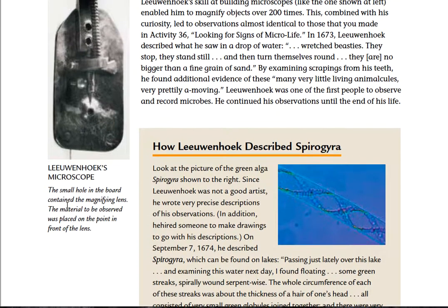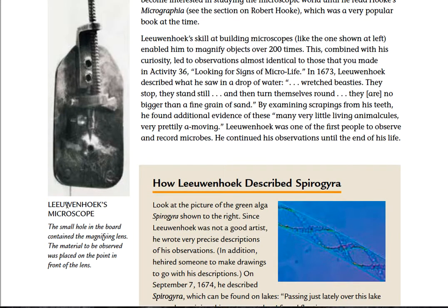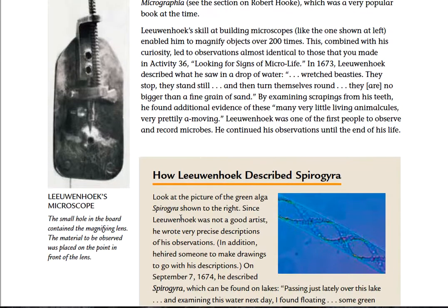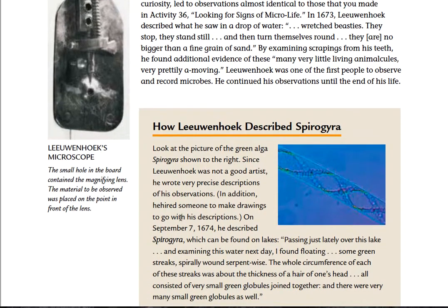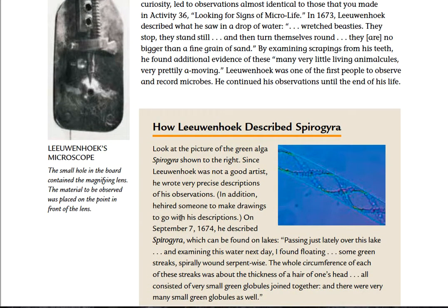Leeuwenhoek's microscope — the small hole in the board contained the magnifying lens. The material to be observed was placed on the point in front of the lens. Look at how Leeuwenhoek describes spirogyra. Since Leeuwenhoek was not a good artist, he wrote very precise descriptions of his observations. In addition, he hired someone to make drawings to go with his descriptions.